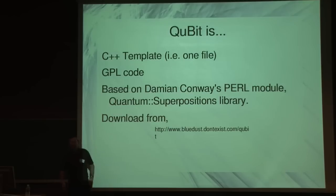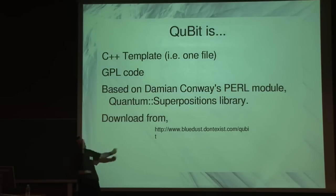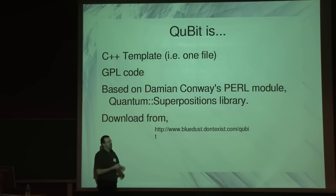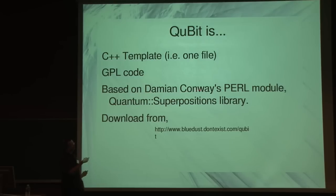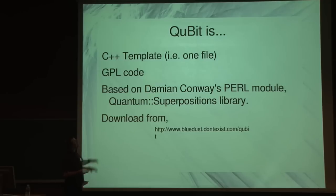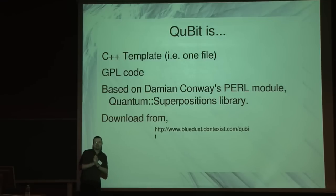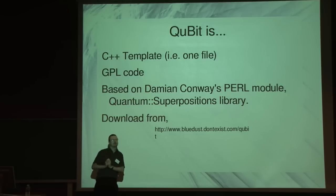It's quite interesting — you can do funky things with this. Qubit is a C++ template, which means there's one header file you can just include from your C code. It does funky things, it's GPL of course, otherwise they wouldn't let me in. And Damien Conway, who's a very smart chap — I think he's from an Australian university — came up with a Perl module that did this sort of thing, and I thought, I don't program Perl well enough to use this. Well, I can do C++, so I had a go myself. And there's a website, which is badly formatted as usual for my slides.